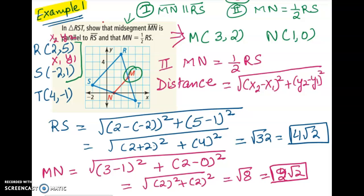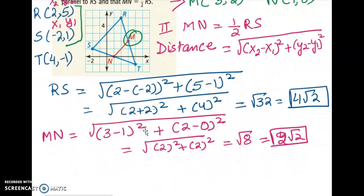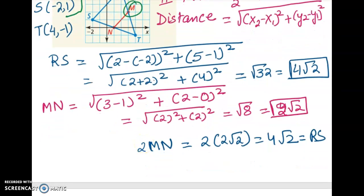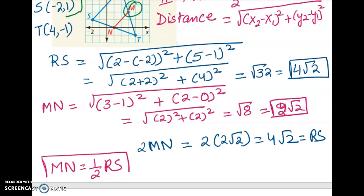We now have all the measurements. As you can see from these calculations, MN is half of 4 radical 2. If I multiply 2 times the segment length of MN — 2 times 2 radical 2 — it gives 4 radical 2, which is nothing but segment RS. Based on that, I can conclude that MN is nothing but half of segment RS. We are done with our problem.